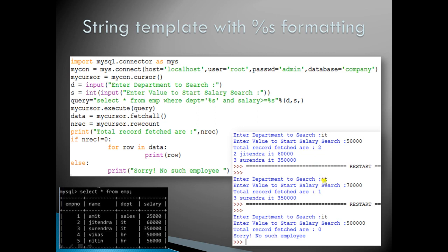Running again with salary 70,000 returns only one result. Running again with department IT and salary 50,000 using a greater-than (not greater-than-or-equal) condition returns no result, so the message 'sorry, no such employee' appears.